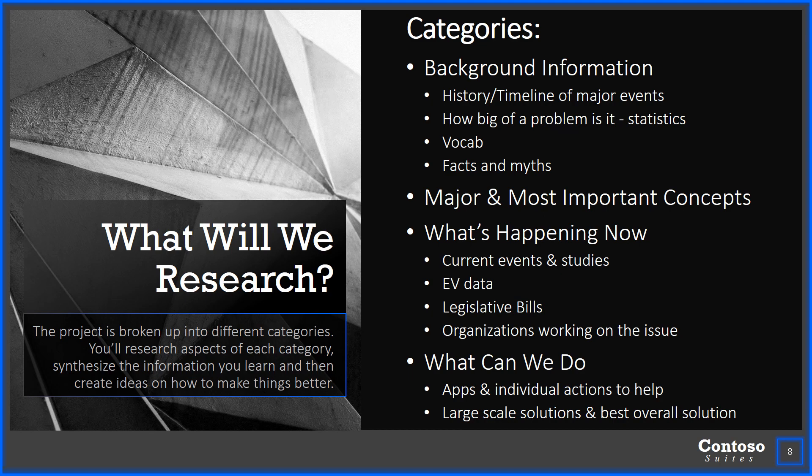Teach us about the vocabulary related to your topic. If you have a topic about addiction, tell us what addiction is, what different types there are, how someone knows if they're addicted, and what withdrawal symptoms look like — find four to six vocab words specific to your topic. Also address facts and myths. There are a lot of myths surrounding all these issues, and some of them actually contribute to making these issues even worse. Find three or four myths related to your topic and let us know what's actually going on — what we might think versus what the truth really is.